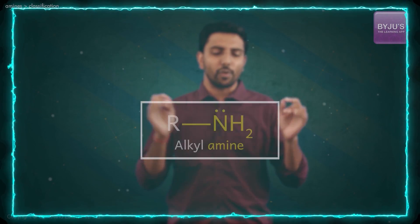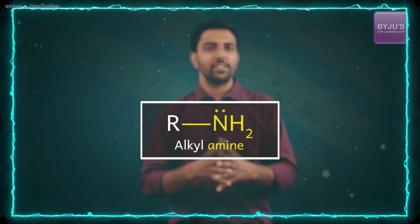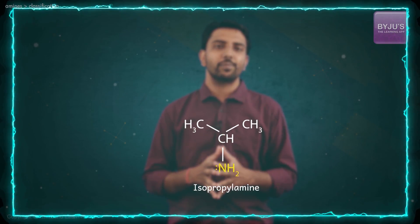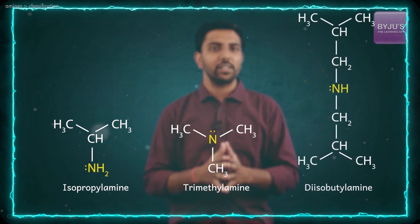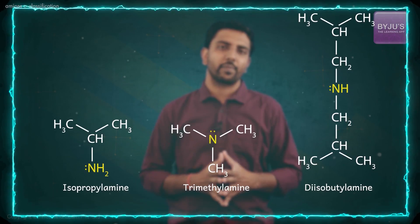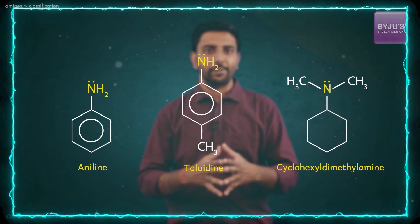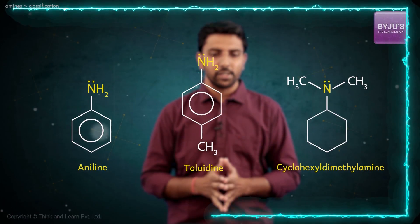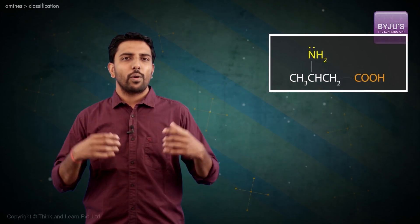Naturally, the next question is how do we name these? The common names are very simple to use — we just use the format alkyl amine. For instance, this is isopropylamine, this is trimethylamine, and this one is diisobutylamine. Likewise, there are aniline and toluidine.